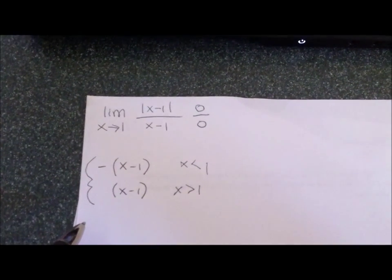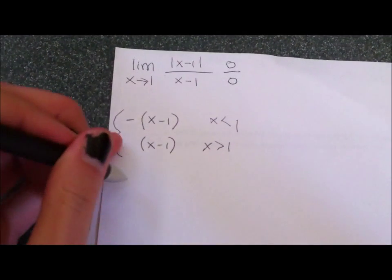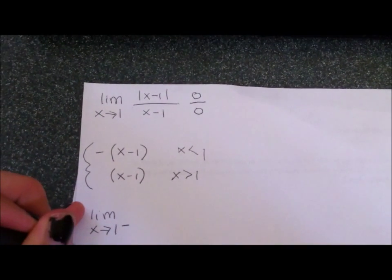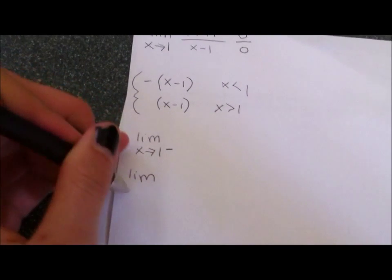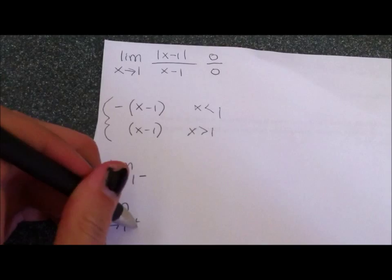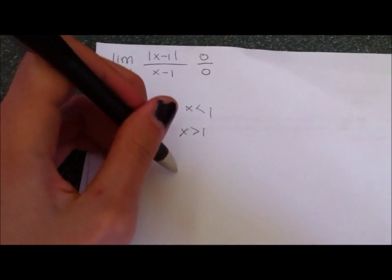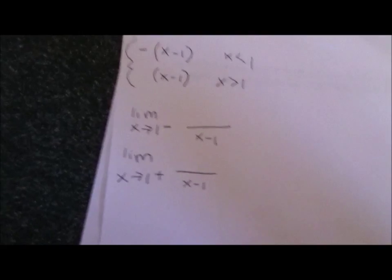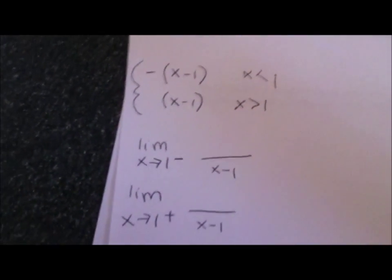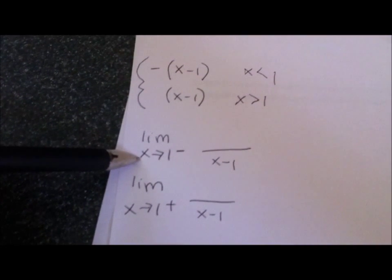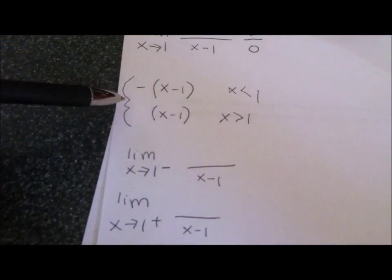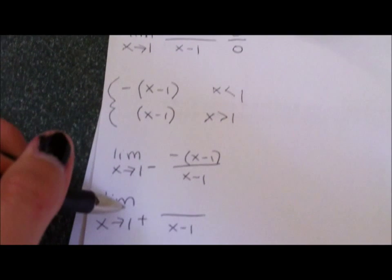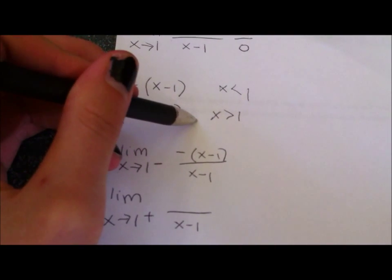So now that we have that, we can break this up into two different limits. The limit as x approaches 1 from the left, and the limit as x approaches 1 from the right. So we know that we can just leave x minus 1 on bottom, because that doesn't change. But now we split it up using our piecewise function. So if it's approaching from the left, then that means that x is less than 1, or it's negative. So we plug that in. And then if it's approaching from the right, then we have this. X is greater than 1, because it's going to be positive.